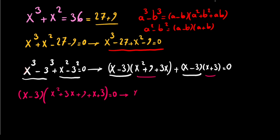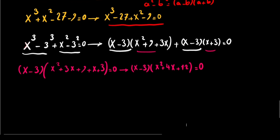Factoring out (x minus 3), we combine the remaining parts: x squared plus 3x plus 9 plus x plus 3, which gives us (x minus 3)(x squared plus 4x plus 12) equals 0.